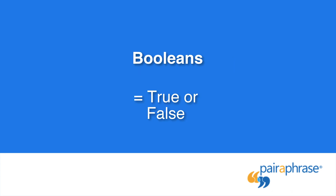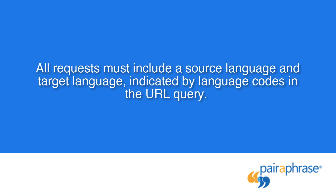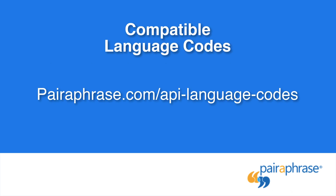Booleans are either true or false. Also, it's important to remember that all requests must include a source language and target language, indicated by language codes in the URL query. View the list of language codes compatible with Paraphrase at paraphrase.com/api-language-codes.